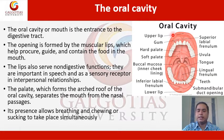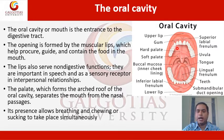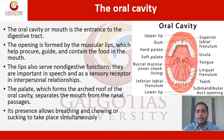A human oral cavity has upper lips, lower lips, superior labial frenulum, inferior labial frenulum, and lingual frenulum. It also has hard palate as well as soft palate. The soft palate is associated with the uvula. The oral cavity, or mouth, is the entrance to the digestive tract. The opening is formed by the muscular lips, which help procure, guide, and contain the food in the mouth.